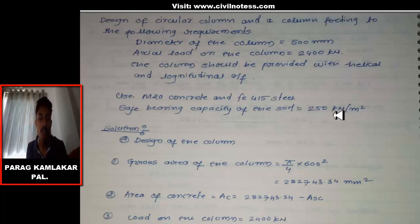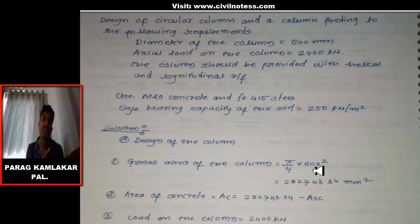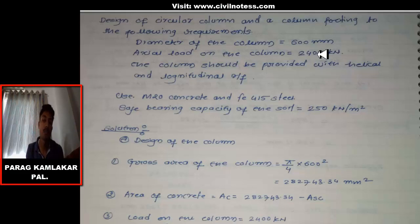Whenever you want to design a circular column, first you need to determine the gross area. The gross area of the column is given by the formula π/4 × d². We have the diameter of the column as 600 mm, so we put the value in to get the gross area of the column.